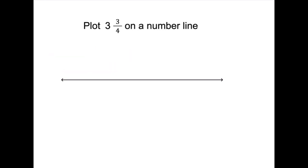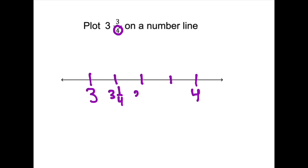Now let's move on to ordering mixed numbers on a number line. A mixed number has a whole number and a fraction. When we make the number line, we put the whole number and then the whole number above it. We need 4 sections, so we add 3 lines to make 4 sections, and each represents 1/4th. So this gives us 3 and 1/4th, 3 and 2/4ths which is 3 and a half, 3 and 3/4ths, and then 4. Now we can easily see 3 and 3/4ths on that number line.